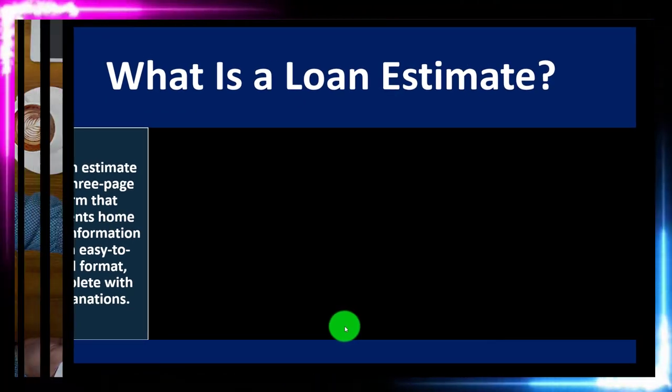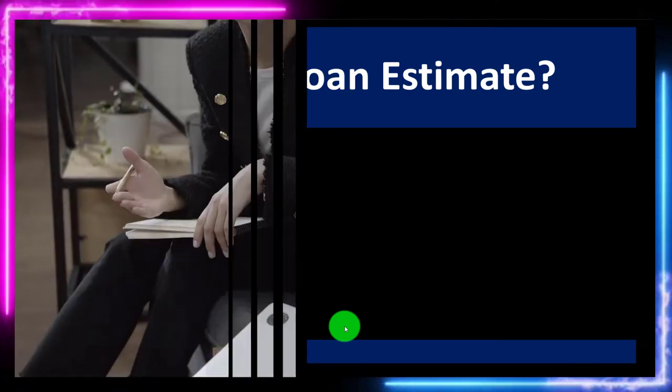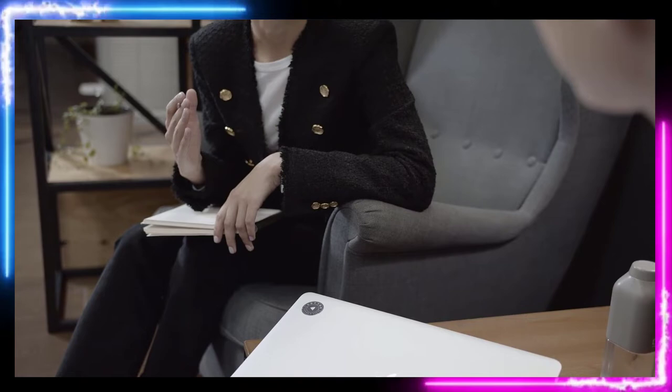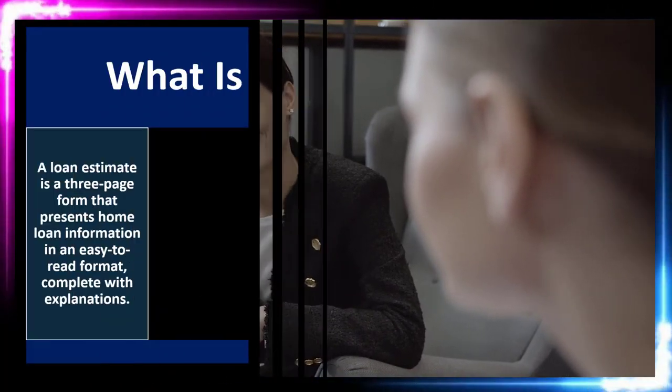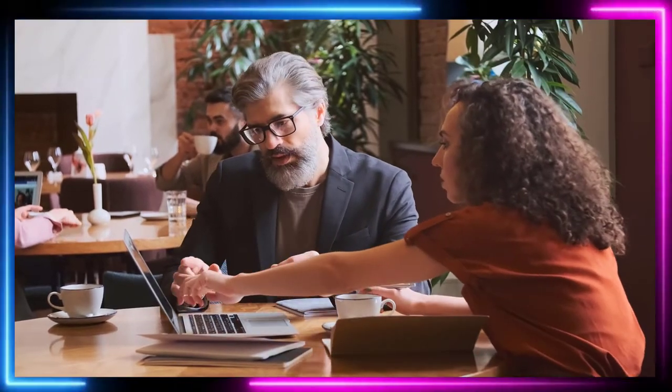When you do, you'll get a loan estimate — an important document showing the key details of the mortgage for which you've applied. Review your loan estimate carefully before moving forward with the underwriting process to see if you understand the loan and can comfortably afford it. The loan officer determines how much loan you can get, but you need to do your own budgeting to determine how much you can actually afford — you are not dependent on the loan officer for that.